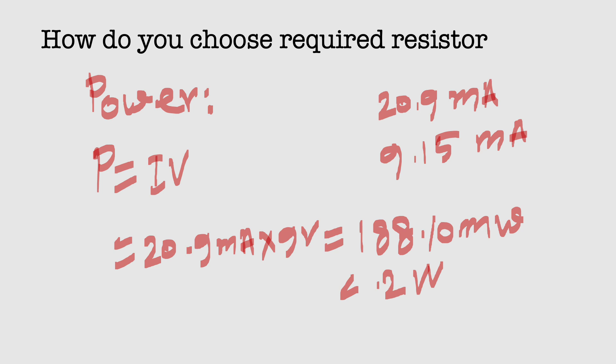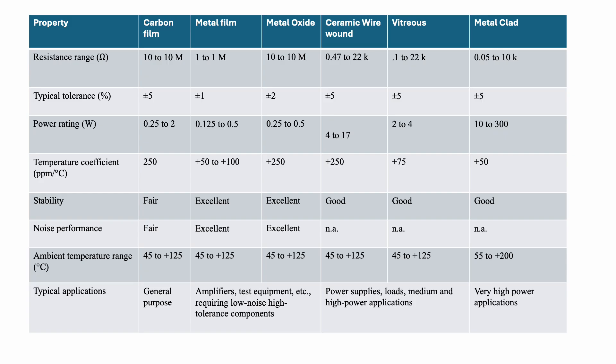So we need to find the appropriate type of resistor. The carbon film and metal film resistors should be all right for this purpose. Let's have a look at this characteristic chart for different types of resistors. We have calculated 0.2 watt and we can actually use resistors rated for this power.